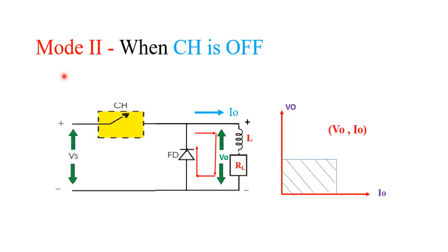In the second mode of operation, the chopper is off, meaning the switch is open. The source voltage disconnects from the load side and the freewheel diode starts conducting. The inductor releases its energy, and as a property of the inductor, it changes polarity when discharging — this node becomes negative and this node becomes positive. The freewheel diode conducts, the direction of current remains the same, and the output voltage is approximately zero.